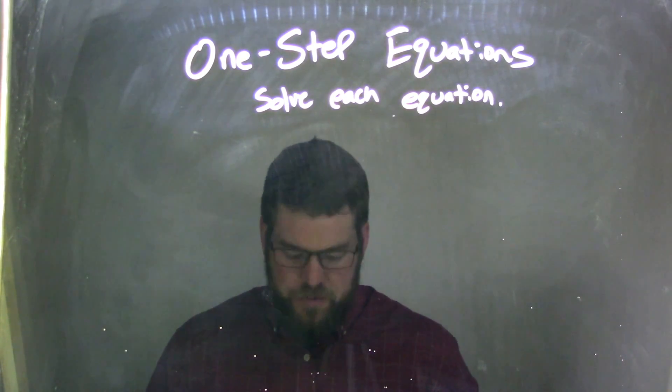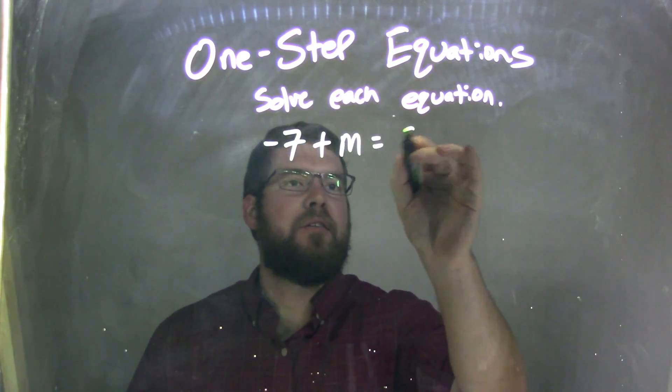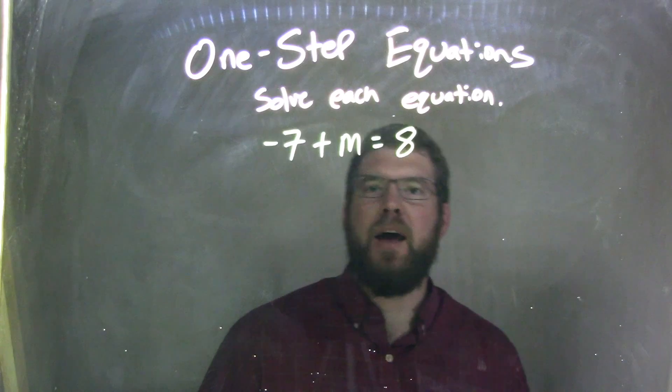So if I was given this equation: negative 7 plus m equals 8.